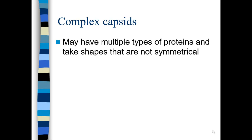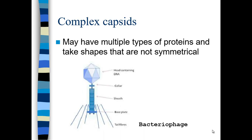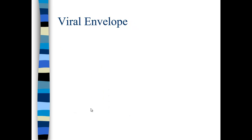There's a third class of capsid. We've talked about helical and icosahedral; the third class is complex. This may have multiple types of proteins and generally takes shapes that are not symmetrical. This includes mainly the bacteriophage — virus particles that infect bacteria. You see an icosahedral-like head that contains DNA, and then the mechanism below — the collar, sheath, base plate, and fibers — is machinery to inject the DNA directly into the host bacterial cell. The tail fibers orient the virus so it can inject viral DNA through the cell membrane.